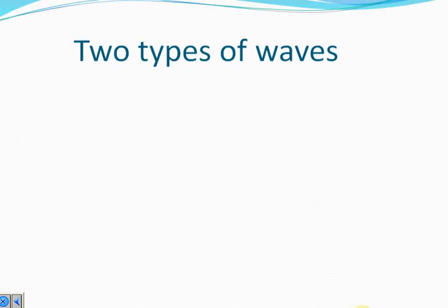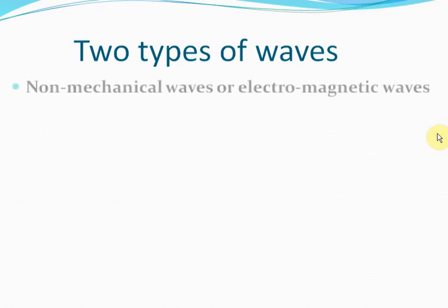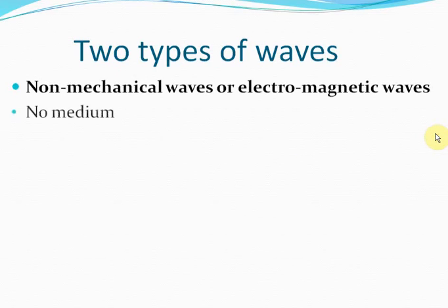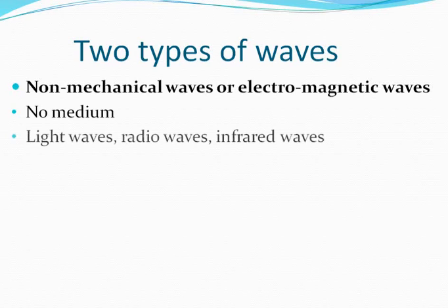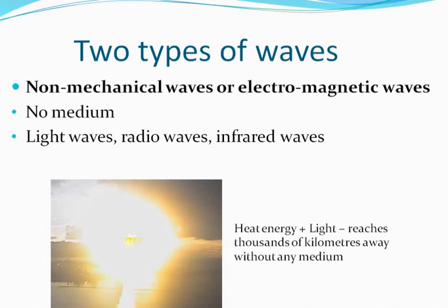There are two types of waves. The first type are electromagnetic or non-mechanical waves. These are waves which do not require a medium to travel. This means that energy can be transferred from one point to another in this kind of wave motion without there being any vibrating particles in between. Sound waves are not electromagnetic waves because they require air. But electromagnetic waves can travel through space because they don't require any medium. Light waves, radio waves, and infrared waves are all electromagnetic waves. So you receive heat from the sun which is thousands of kilometers away, even though there is outer space — with no air — in between. Because electromagnetic waves can travel through space, you feel hot.